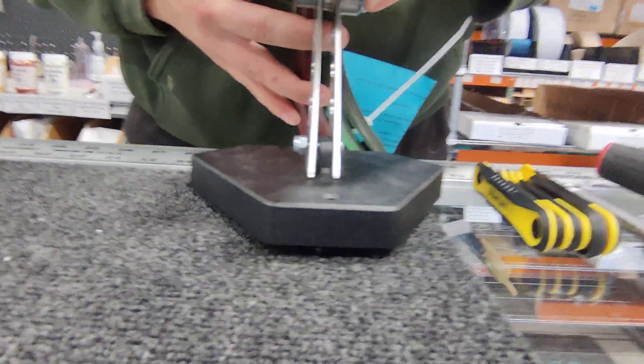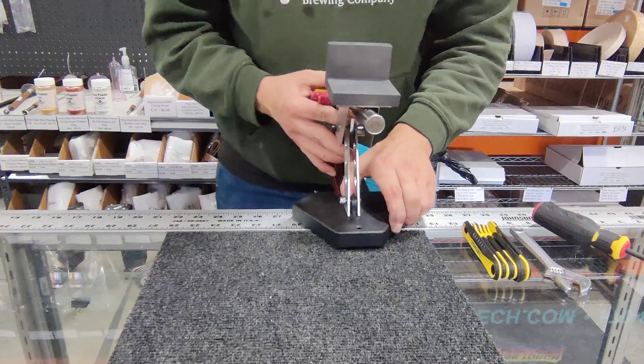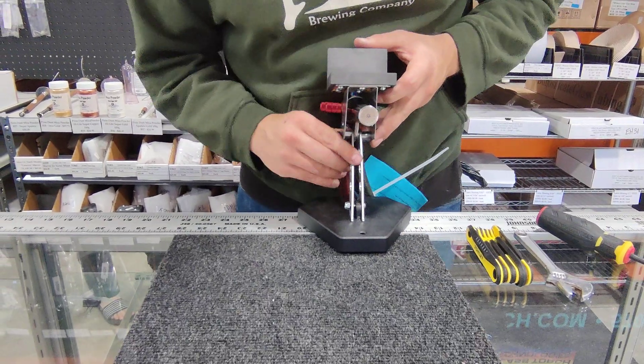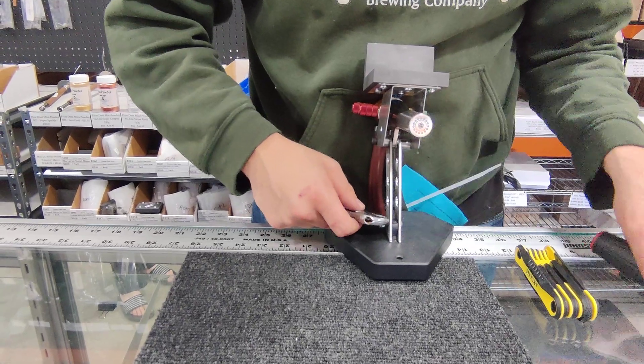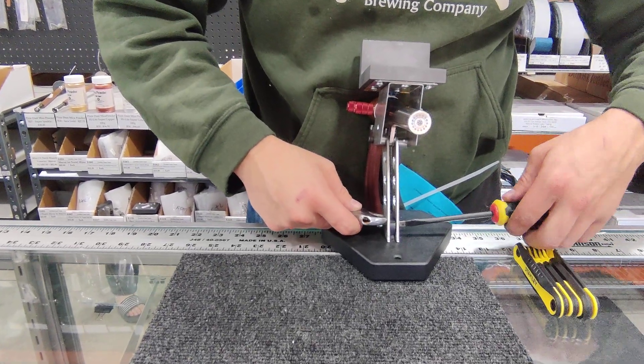All right. Now before we tension everything, we need to back this up so the hoses aren't in the way. Let's make sure that we're feeling pretty good about this as far as placement and angle. We can cinch down the bottom.